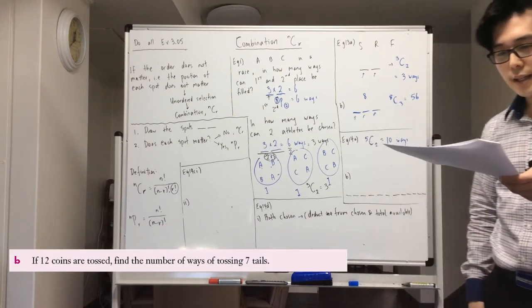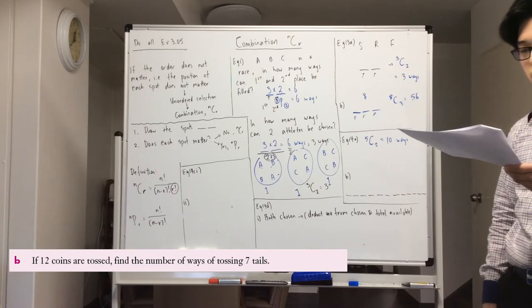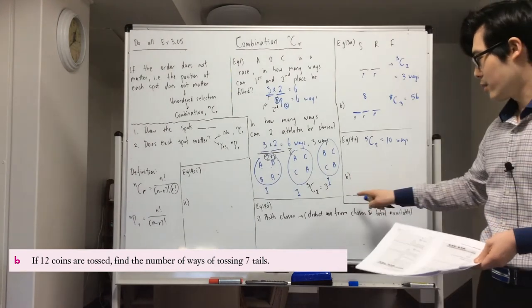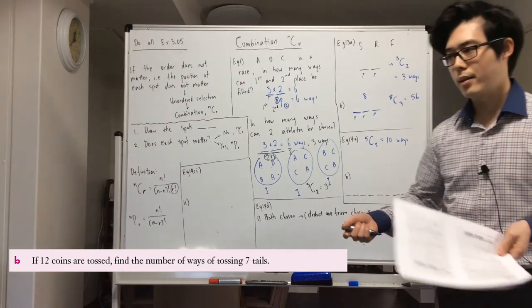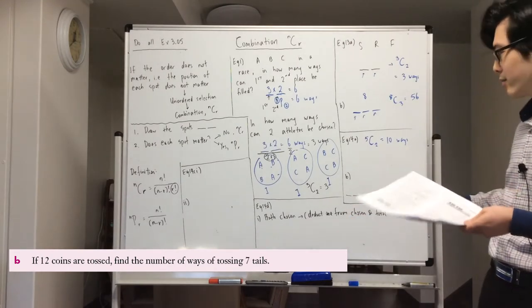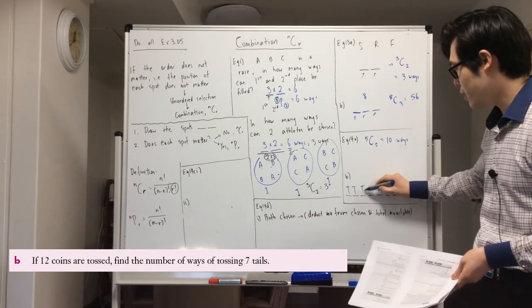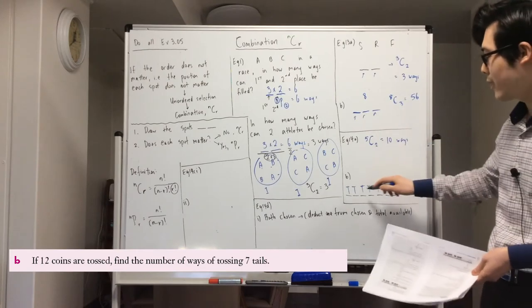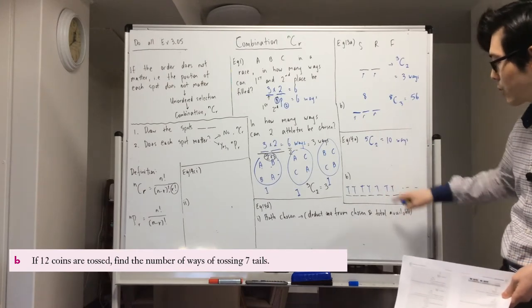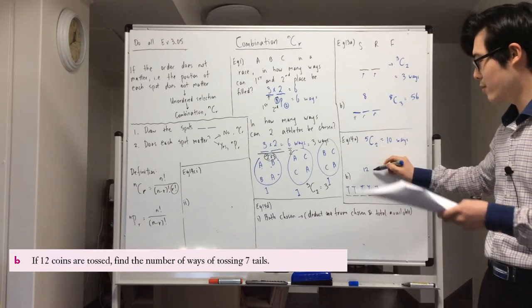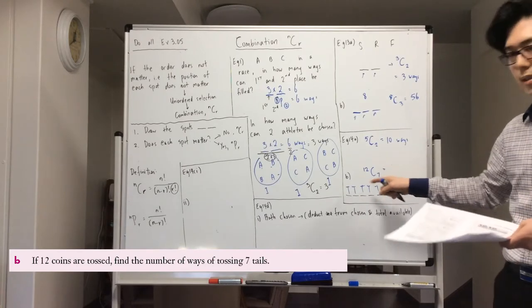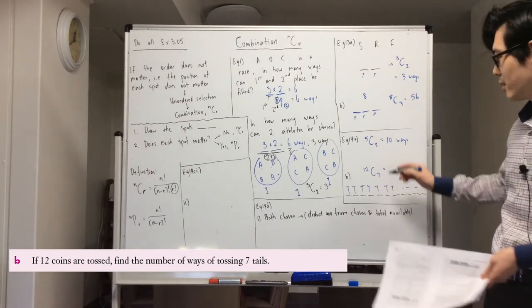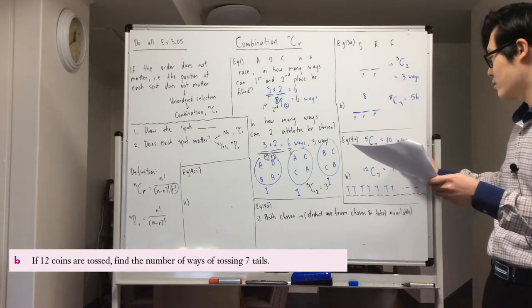Example 14B: if 12 coins are tossed, find the number of ways of getting seven tails. I've drawn 12 spots because each coin can have a different outcome. You could have the first seven being tails, or the last seven, or the tails scattered in any order — it doesn't matter where you get the tails, it's not spot-specific. So once again it's combination: 12 choose 7, which gives 792 ways.